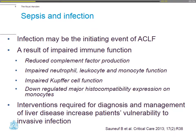Sepsis and infection is the most common initiating event in acute-on-chronic liver failure. We know that patients with liver failure are at high risk of infection because of impaired immune function, reduced complement factor production, impaired neutrophil, leukocyte, and monocyte function, and Kupffer cell function. It's also the interventions we do for diagnosis—putting in lines and taking biopsies—which makes patients with liver failure at increased risk of infection.